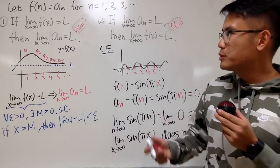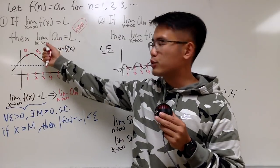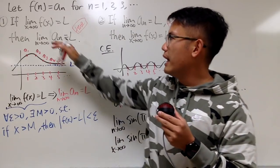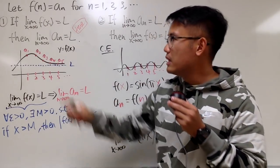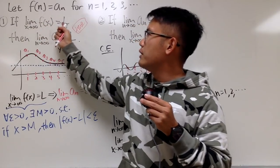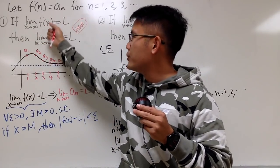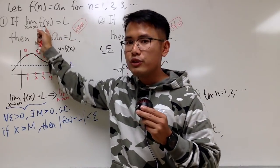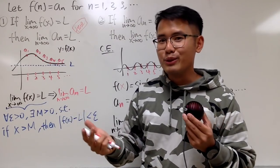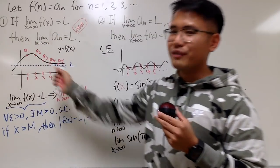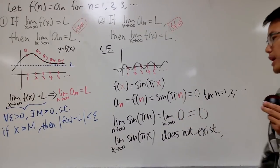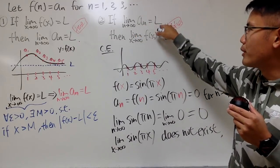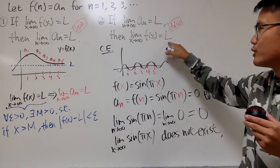Here is the deal: sometimes when you're trying to calculate the limit as n → ∞ of some sequence aₙ, it might be hard to do. In that case, go ahead and change it to the function situation, because if the function limit gives you a nice answer, by Statement 1 you can conclude the sequence has the same limit. The benefit is that you can then use L'Hôpital's rule. Just be careful — it does not go the other way around. When you have a bunch of dots converging to a number, it doesn't mean the curve will also be nicely behaved.